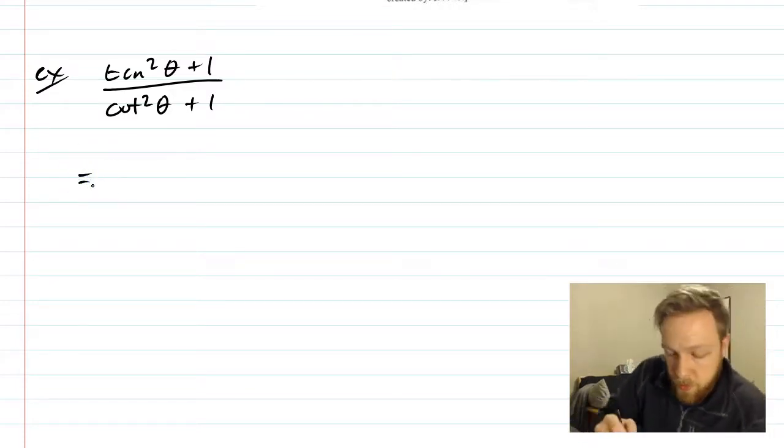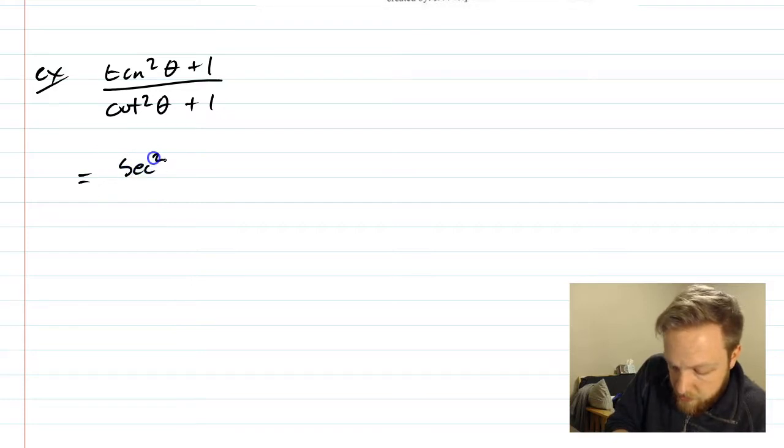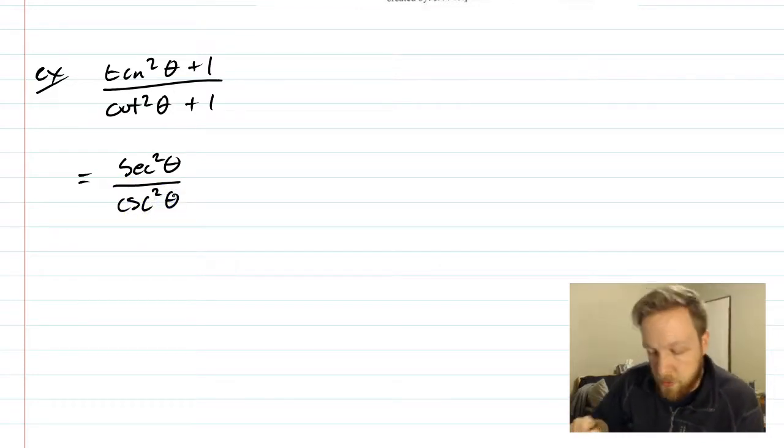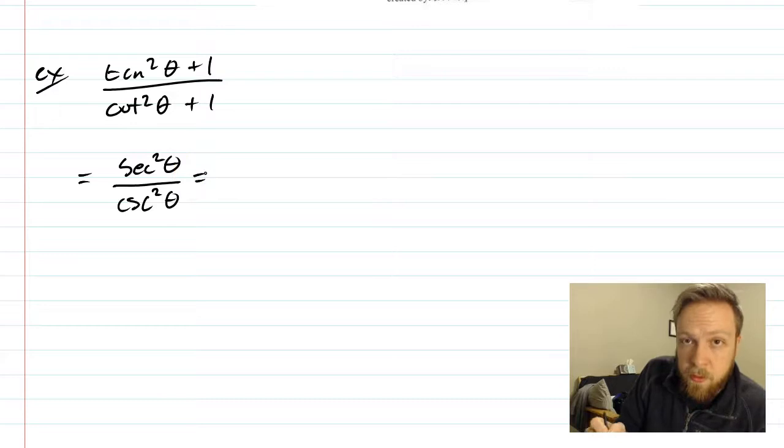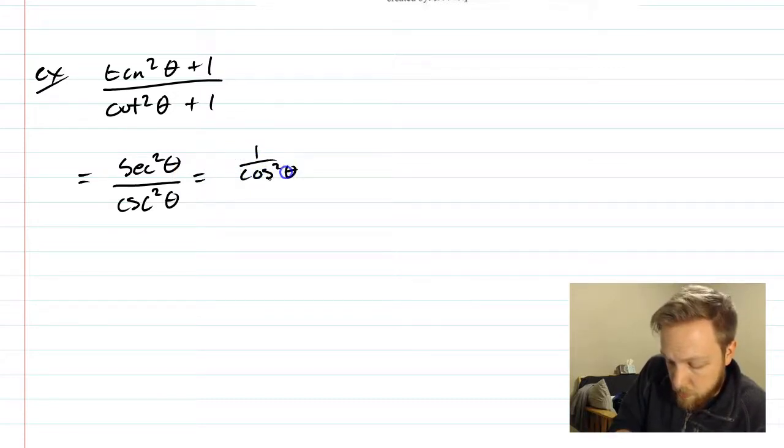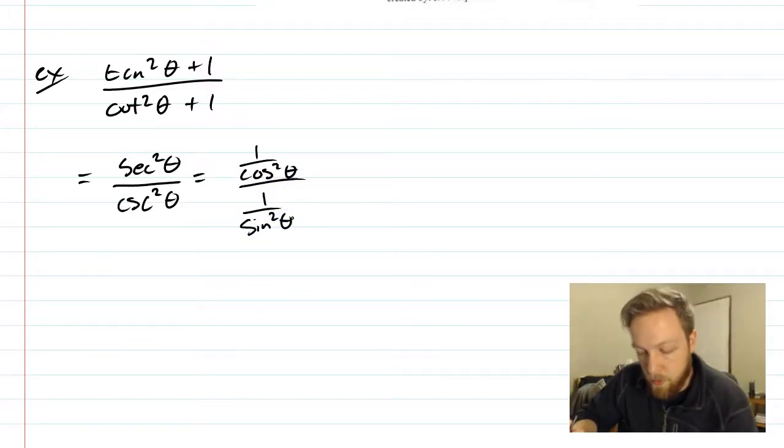In this one, the top tan squared plus one is going to be secant squared theta. The bottom is going to be cosecant squared theta. And to continue this, I'm going to rewrite this all in terms of sine and cosine. So this is going to be one over cosine squared theta all over one over sine squared theta.